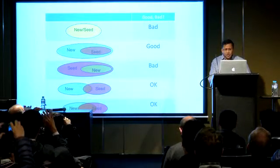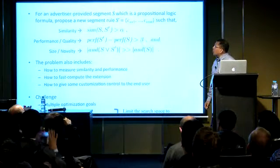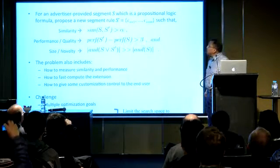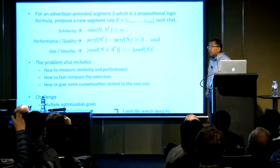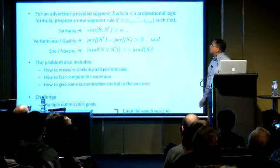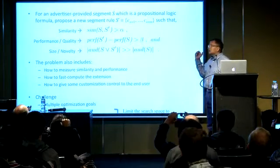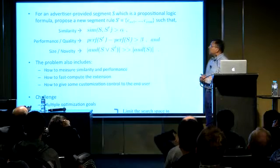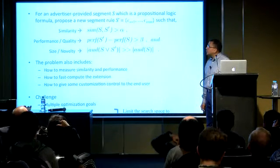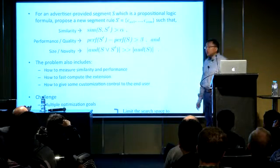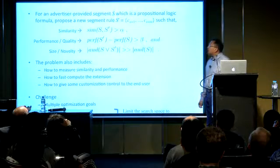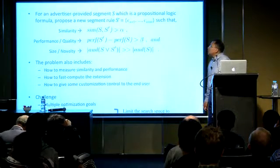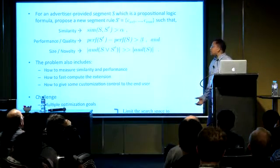Here we define the problem more formally. You start with the audience segment S, which is a propositional logic consisting of category information. We then propose a new segment S prime consisting of M other categories, such that three criteria are met. First, similarity: these segments must be similar enough, so similarity must be greater than a certain threshold. Second, performance or quality measure: the difference in performance between the new and old segment should be bounded. Third, the segment must obviously be larger than what you started with — otherwise there is no point.